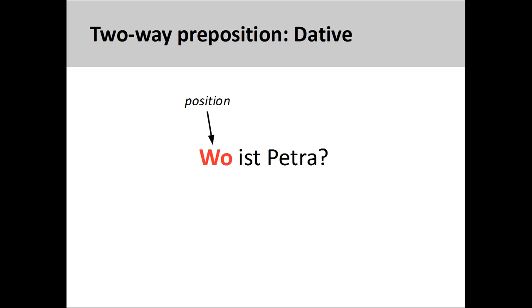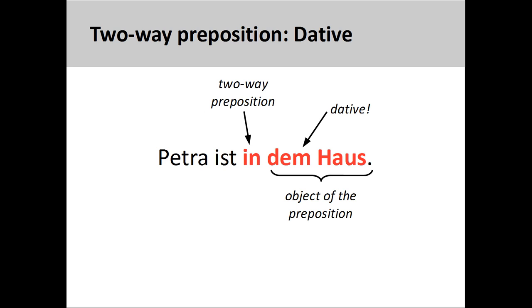So, if I were to ask the question, wo is Petra, where is Petra, which is a question about her position, I would need to use in with a dative object. Petra is in dem Haus. Petra is in the house.